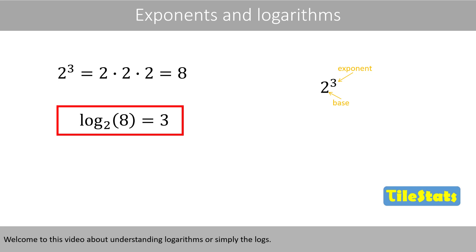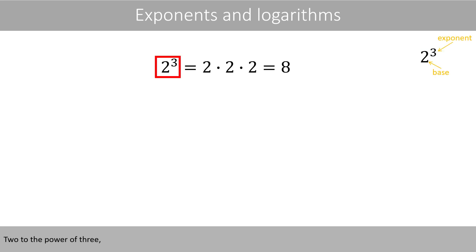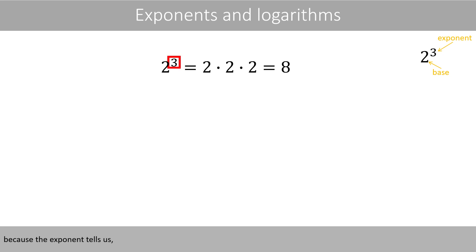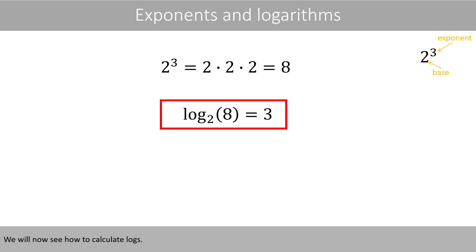Welcome to this video about understanding logarithms, or simply the logs. The exponent is the number we place up here, whereas this number is called the base. 2 to the power of 3 is 8, because the exponent tells us that we should multiply the number 2 by itself 3 times. 2 times 2 is 4, and 4 times 2 is 8. We'll now see how we can calculate the logs.